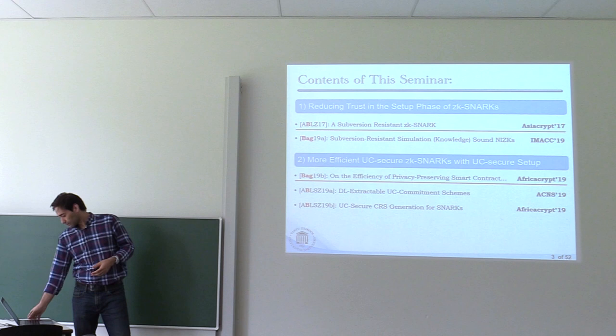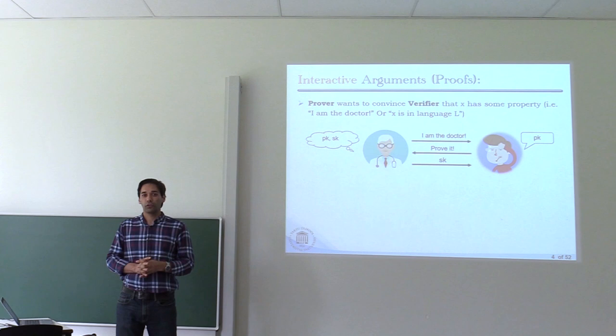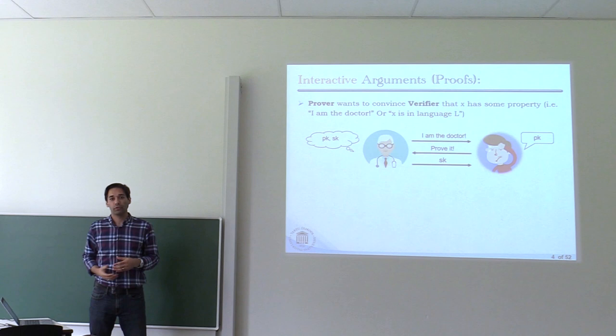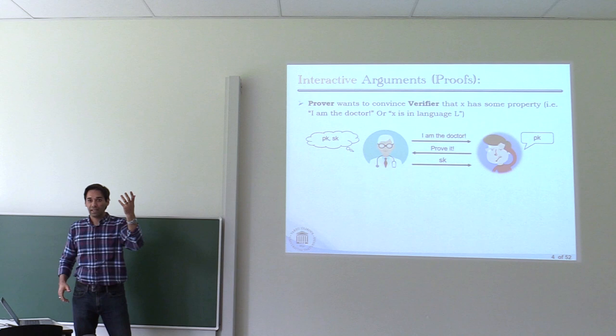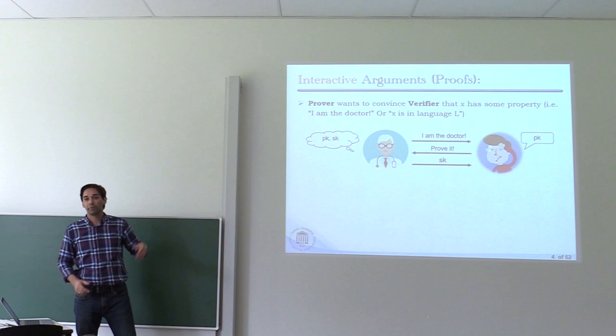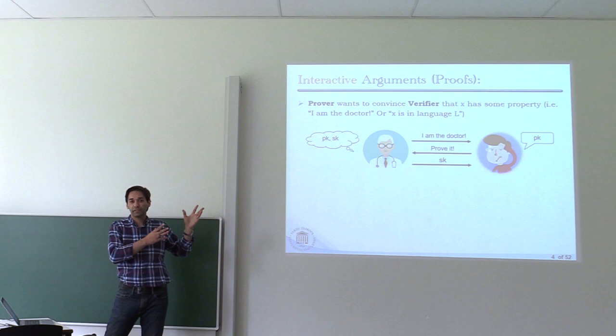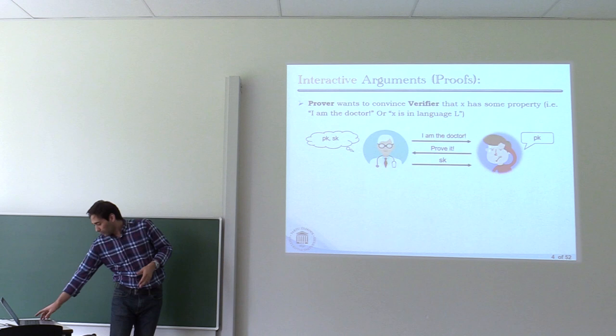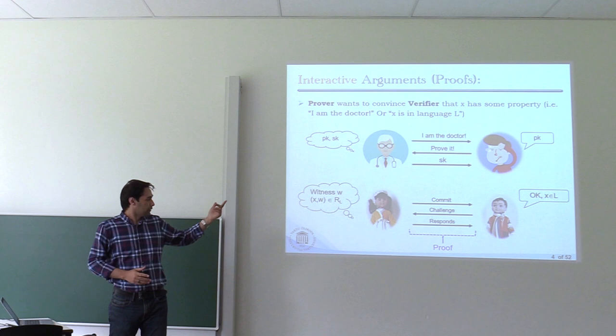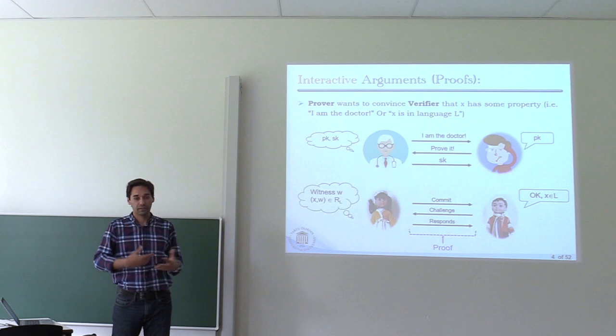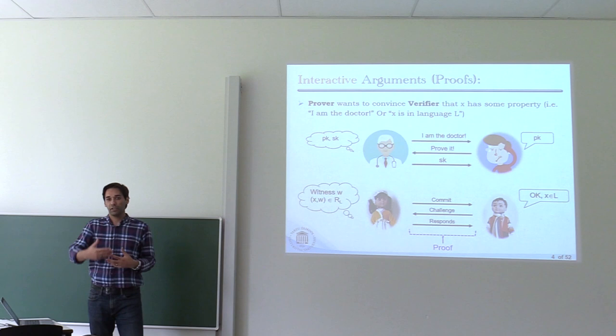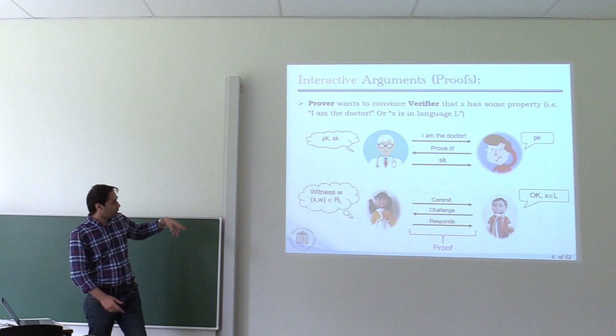As an introduction, I will start with interactive argument or proof systems. Usually in different applications we need to give a proof for some statement to show that it has some property — for example, you want to give a proof that you are a doctor and know a particular secret key for some public key. Usually these proofs are done interactively, called sigma protocols. More formally, sigma protocols have three messages: first the prover sends a commitment for some random values, then gets a challenge, and then based on that commitment and challenge produces the last message called the response. This communication between prover and verifier is called a proof.